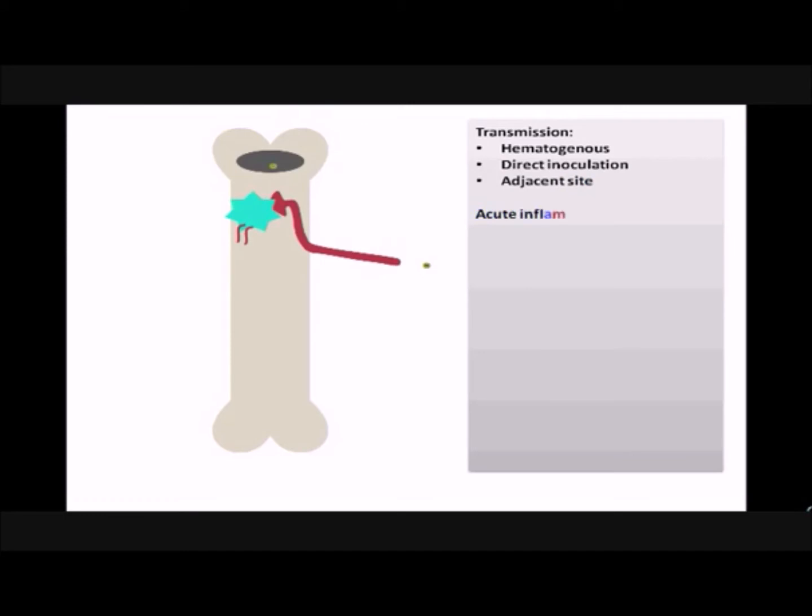Edema and pus formation from acute inflammation leads to significant rise in the intramedullary pressure. This leads to vascular collapse resulting in ischemic necrosis of the bone.